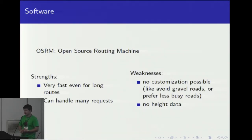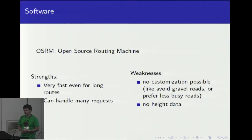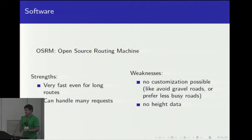The software they are running is OSRM. Why OSRM? Well, it's very fast and it can easily handle very long routes. If we want to be able to run it on OpenStreetMap.org, we have to be able to handle lots of requests. It comes at the price that there is little customization. We have three profiles — for cyclists, for pedestrians, and for cars — but you cannot customize it, like as a cyclist wanting to avoid gravel roads because you have a road bike, or preferring less busy roads.